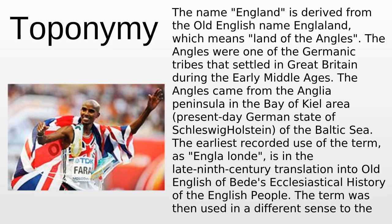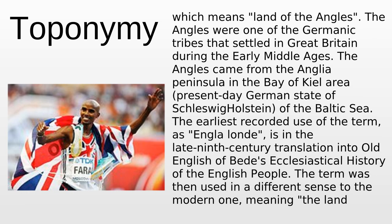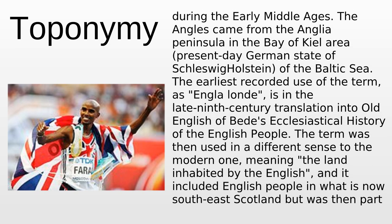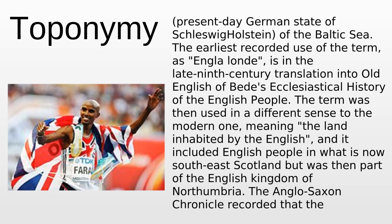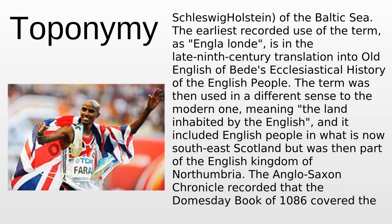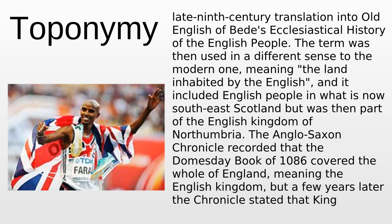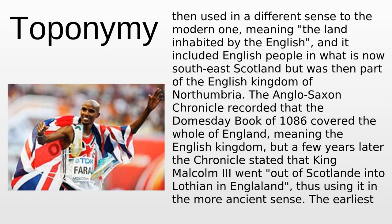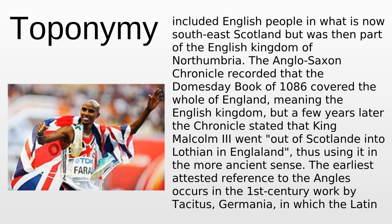Toponymy. The name England is derived from the Old English name meaning 'Land of the Angles.' The Angles were one of the Germanic tribes that settled in Great Britain during the early Middle Ages. They came from the Anglia Peninsula in the Bay of Kiel area, present-day German state of Schleswig-Holstein. The earliest recorded use of the term 'England' is in the late 9th century translation into Old English of Bede's Ecclesiastical History of the English People, where it meant 'the land inhabited by the English.'